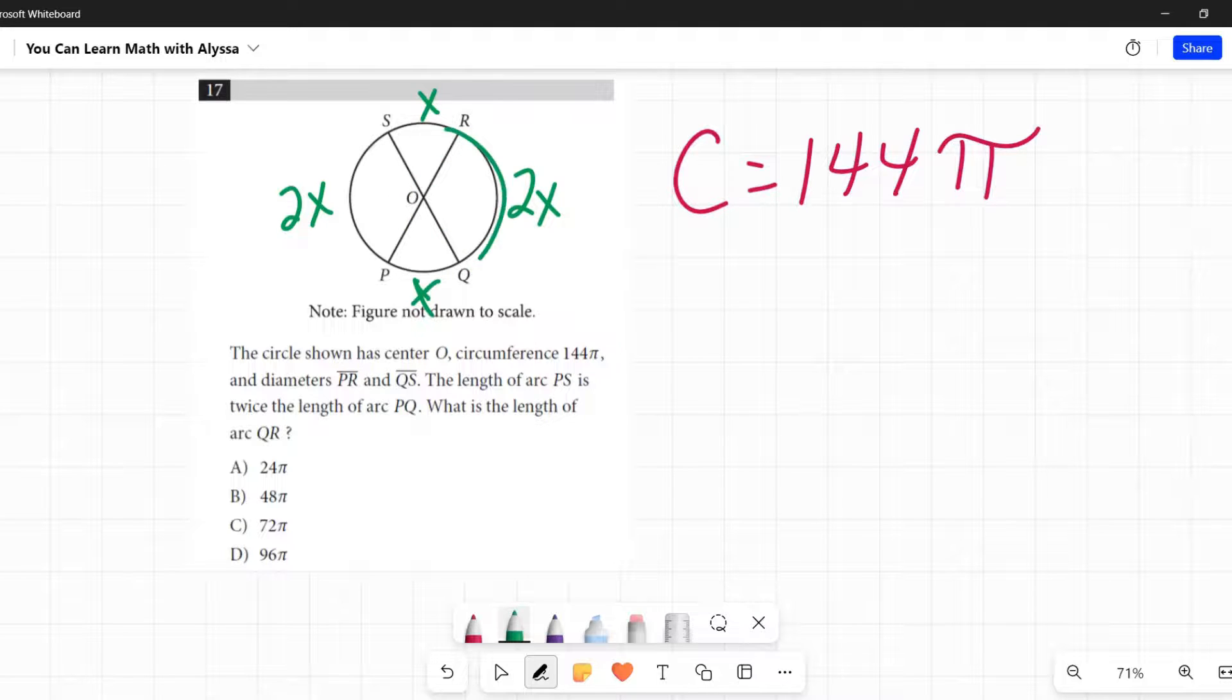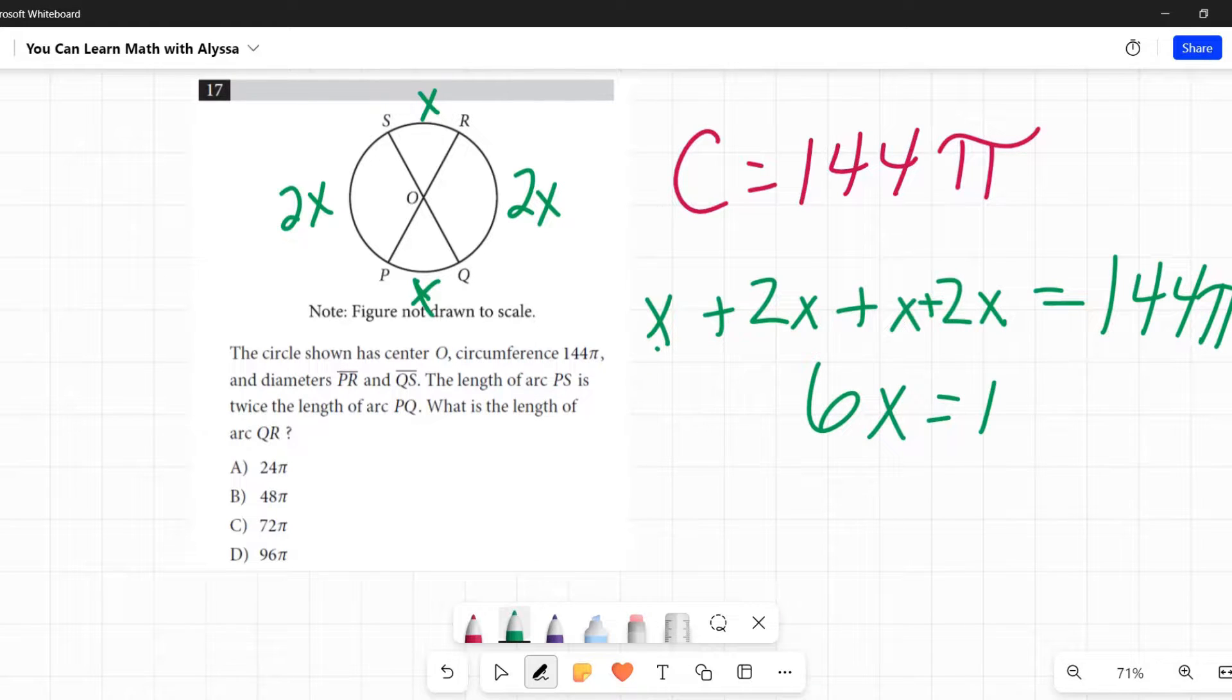Now circumference is the distance all the way around. So X plus 2X plus X plus 2X is going to equal that circumference. So let's write that out: X plus 2X plus X plus 2X equals the circumference, which we were told is 144π. So if I add those together, that is 6X equals 144π.